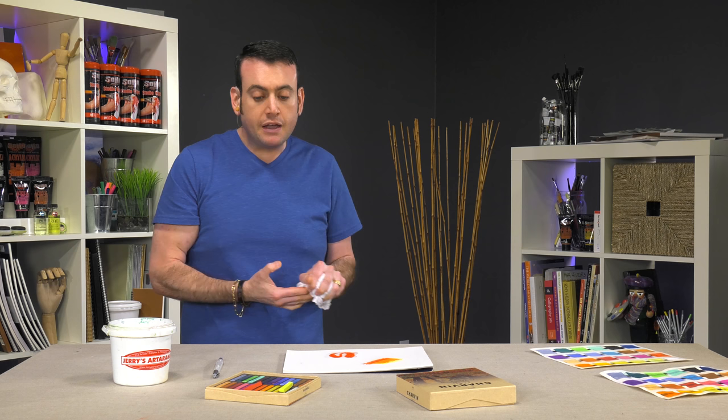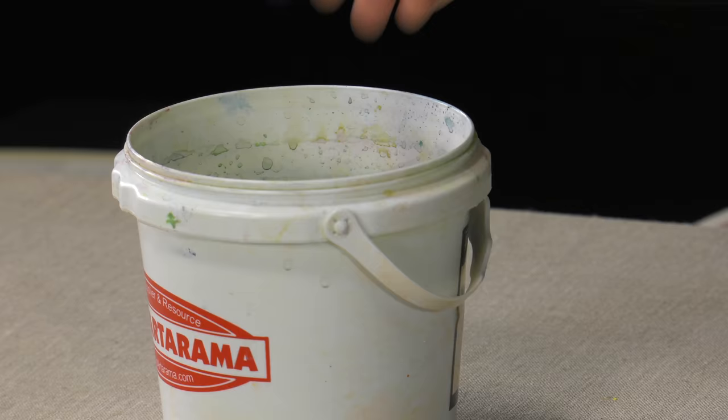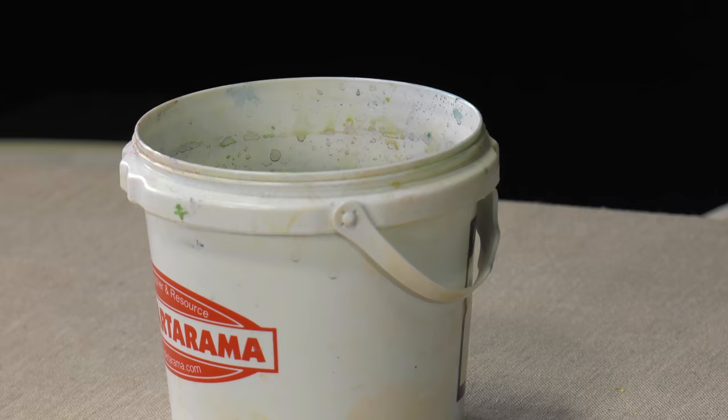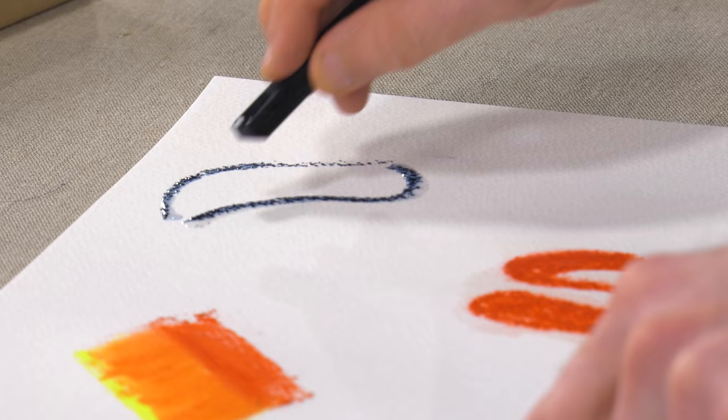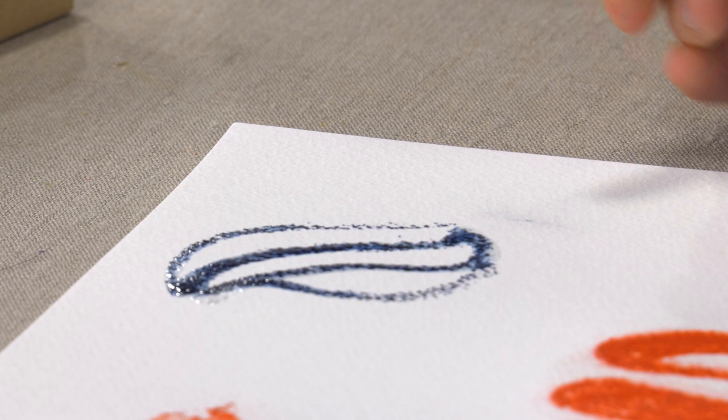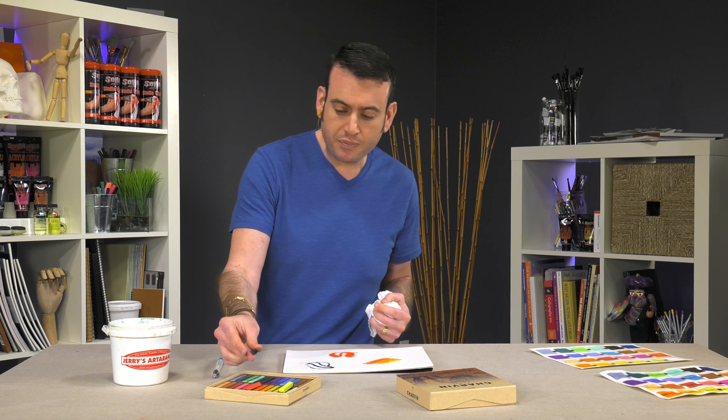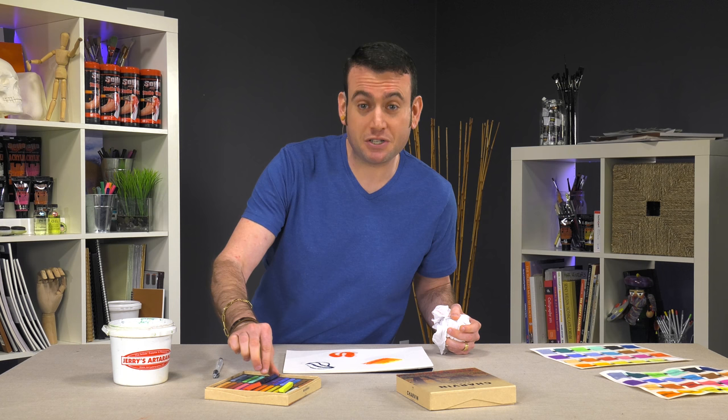And then the other technique I'll show you is kind of an inverse where I have dry paper, but I'm going to dip my pastel in water directly. Just to give you an idea of what that might look like. You can keep dipping it if you want to keep that water effect. You can see the lines remain a little grainy when you go dry paper with the wet pastel. But that's just up to you.